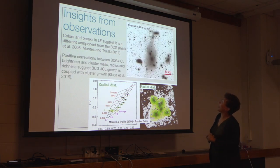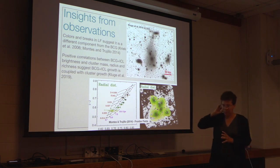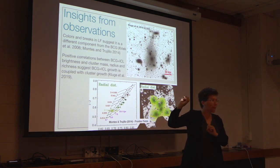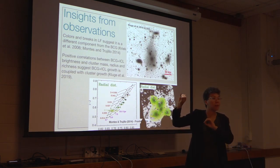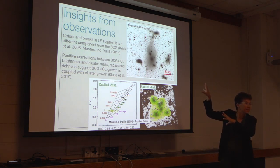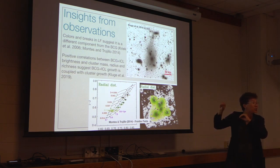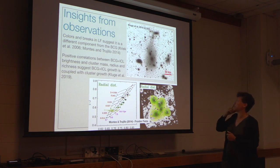I wanted to highlight this paper which came out just last month. This is a paper from Kluge et al., some of whom are in Germany. They just published deep photometry down to about magnitude 30 for 117 of the local Abel clusters. If you're interested in intracluster light, make sure you check out that paper.